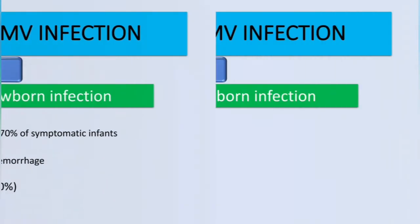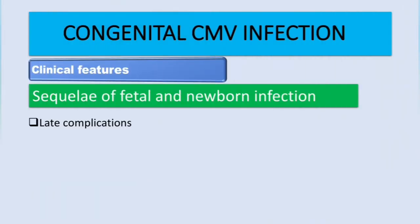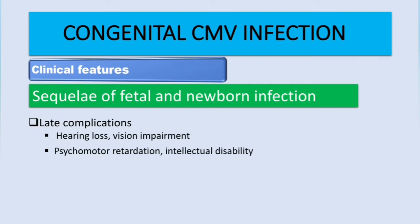Late complications include hearing loss, vision impairment, psychomotor retardation, intellectual disabilities, and dental abnormalities. These dental abnormalities may be severe if the infection occurs in the first trimester, so there is a lot of risk associated with first trimester infection.